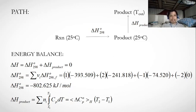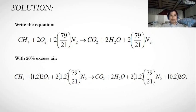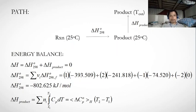The energy balance is: ΔH°₂₉₈ + ΔH_product = 0. The standard enthalpy of reaction at 298 K is the sum of moles times standard heat of formation for products minus reactants. Calculating: 1×(−393.509) + ... gives a standard enthalpy of reaction ΔH°₂₉₈ = −802.625 kJ/mol.